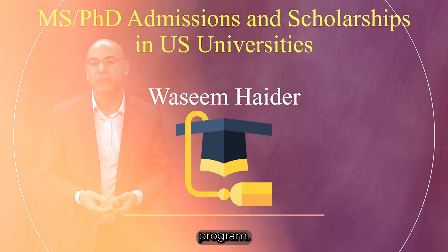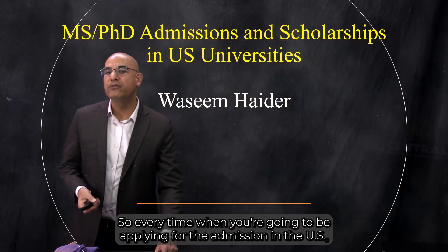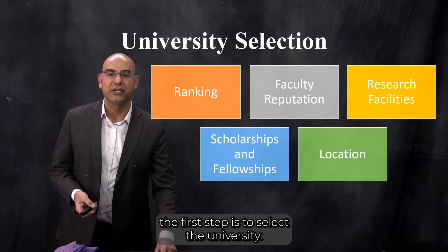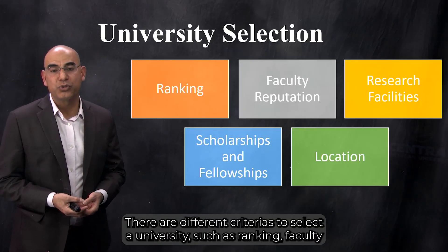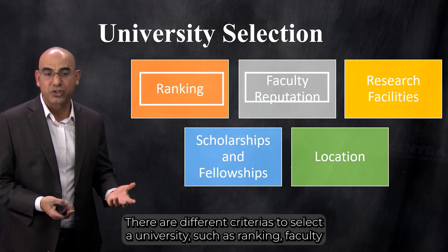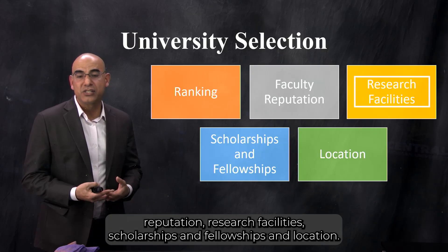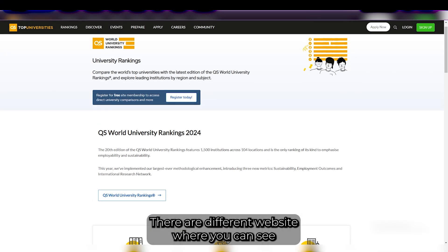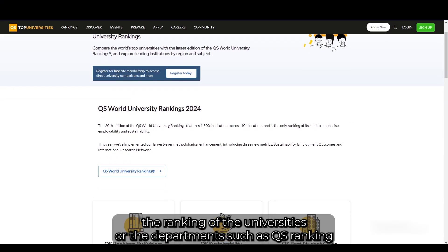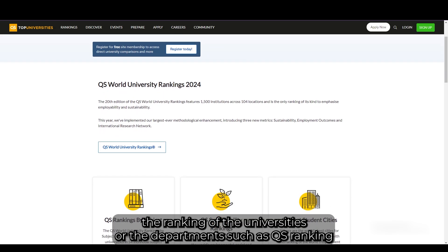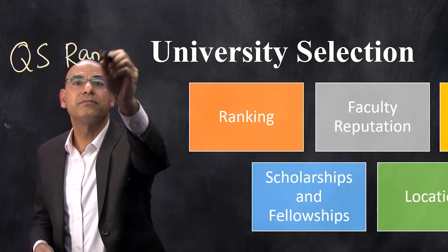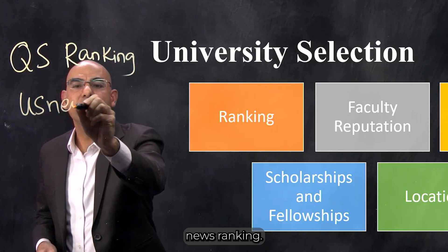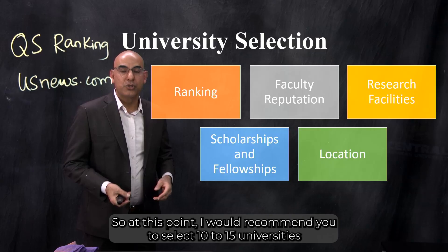Every time when you're going to be applying for admission in the US, the first step is to select the university. There are different criteria to select a university, such as ranking, faculty reputation, research facilities, scholarships and fellowships, and location. For ranking, there are different websites where you can see the ranking of universities or departments, such as QS ranking or US News ranking.